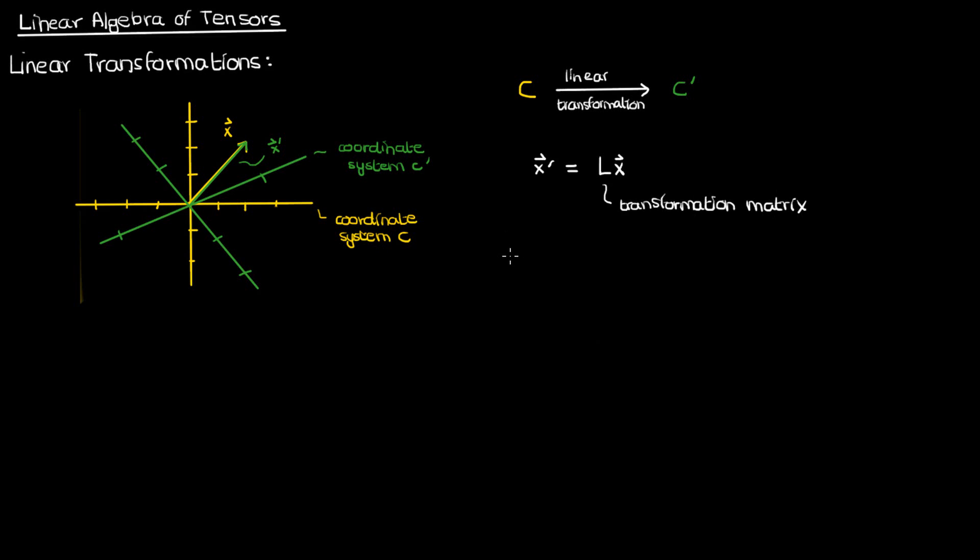Now keep in mind that linear transformations cover a fairly small subset of transformations including scaling the axes and rotating the axes. They're mainly transformations that map a line in the C coordinate system to another line in the C prime coordinate system.